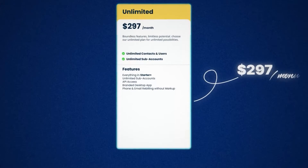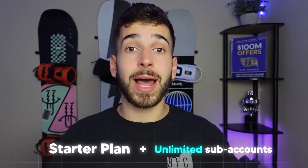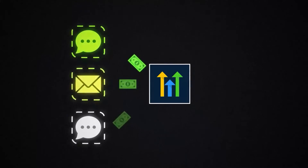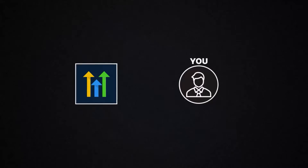The next plan is the Unlimited plan coming in at $297 a month. With this plan you get access to everything in the Starter plan, but you also get unlimited subaccounts, so you can have an unlimited number of businesses or clients signed up with you. You can also automatically rebill your clients for the texts and emails they send out, so as soon as they send a text or email, they're automatically charged and you don't have to worry about it.